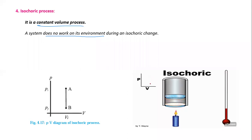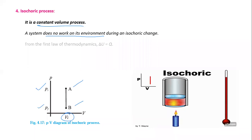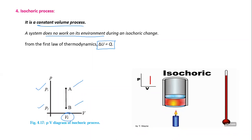On the graph, volume is constant. This is the initial position and this is the final position; this is the initial pressure and this is the final pressure. By the first law of thermodynamics, the increase in internal energy equals Q, because no work is done.